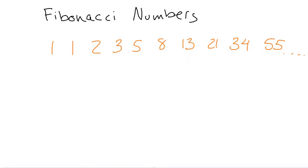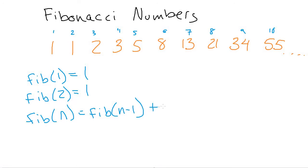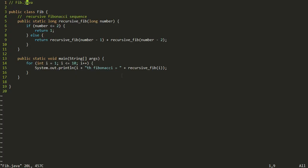We can calculate this using recursion — we can write a method to return the Fibonacci number at a given position in the sequence. What we might want to do is write a function that computes what, say, the ninth or 31st or 82nd Fibonacci number is. We can do that with recursion by saying as our base case that Fibonacci of one equals one. We also need a second base case: Fibonacci of two is also equal to one. More generally, the nth Fibonacci number equals Fibonacci of n-1 plus Fibonacci of n-2.